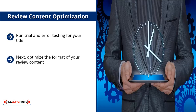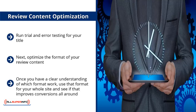Next, optimize the format of your review content. Pay attention to how you set it up and come up with different versions — maybe review different products. See if this format change has an impact on ad click-throughs as well as ad conversions. Once you have a clear understanding of which formats work, use that format for your whole site and see if that improves conversions all around. Keep making variations until you find one that works at a predictable rate.